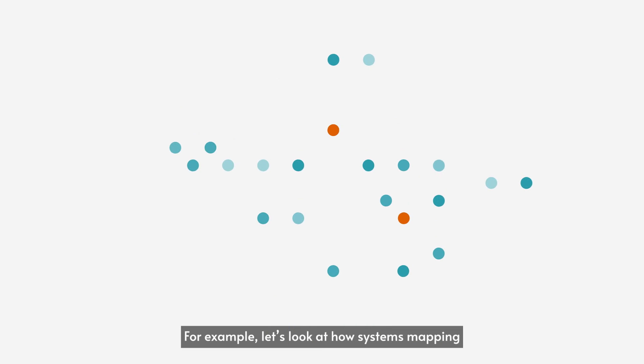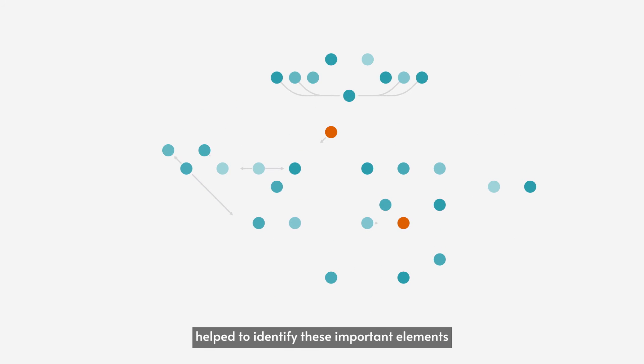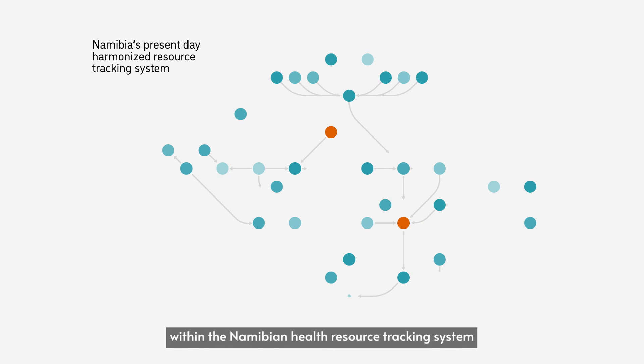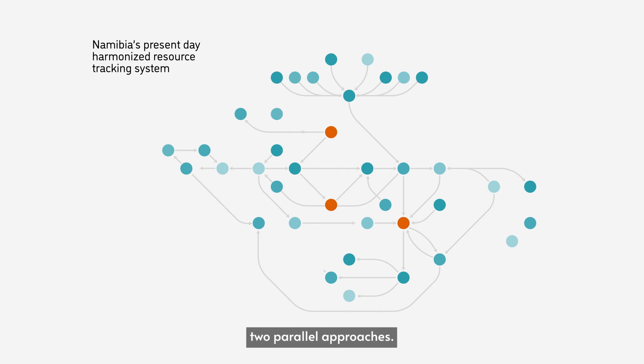For example, let's look at how systems mapping helped to identify these important elements within the Namibian Health Resource Tracking System before and after a process of combining two parallel approaches.